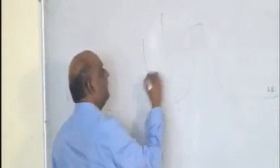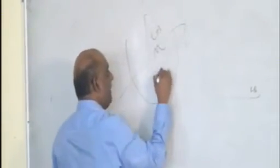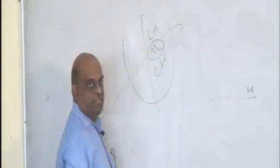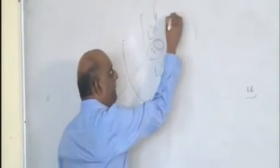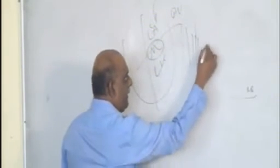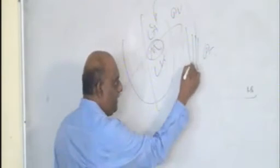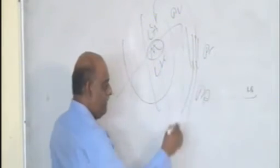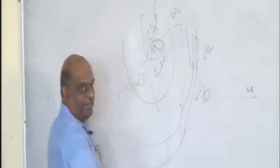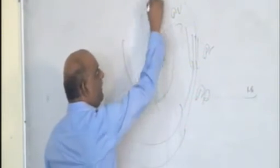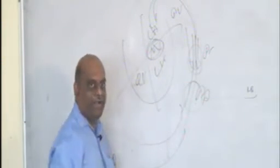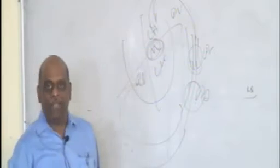You have a mitral valve, left atrium, left ventricle. You have mitral stenosis. What is draining into the left atrium? Pulmonary vein. That is drained by pulmonary capillaries. What is draining into that? Pulmonary artery, coming from the right ventricle. Any mitral stenosis will lead to back pressure in the pulmonary vein, pulmonary capillaries, and ultimately in the pulmonary artery, leading to pulmonary hypertension.